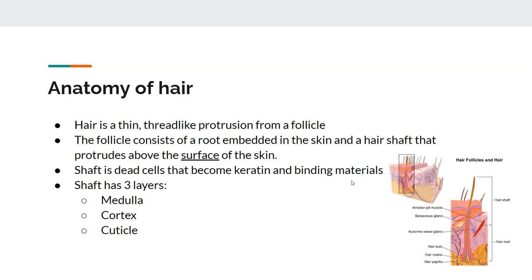Hair protrudes from a follicle in the skin. The root is embedded in the skin and the shaft protrudes above the surface. The shaft is dead and keratinized — it has keratin and some binding materials, similar to horn but not quite as hard. There are three layers to a hair: the medulla, the cortex, and the cuticle.